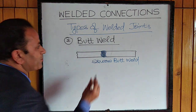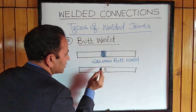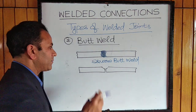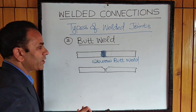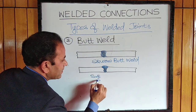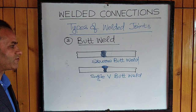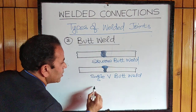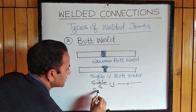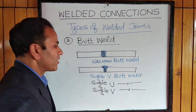If we chamfer the plate edges, we get more area for the filler material to deposit in the gap between the members, forming a more solid joint. This is called a single V butt weld. Depending upon the shape of the edges, it may be a single V butt weld or a single U butt weld.